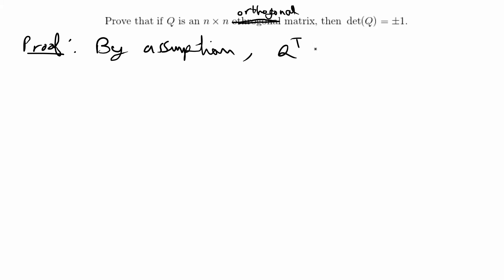By definition, Q transpose is equal to the inverse of Q. Equivalently, we can say that Q times Q transpose is equal to the identity matrix, because the transpose equals the inverse, and a matrix times its inverse is always equal to the identity matrix.